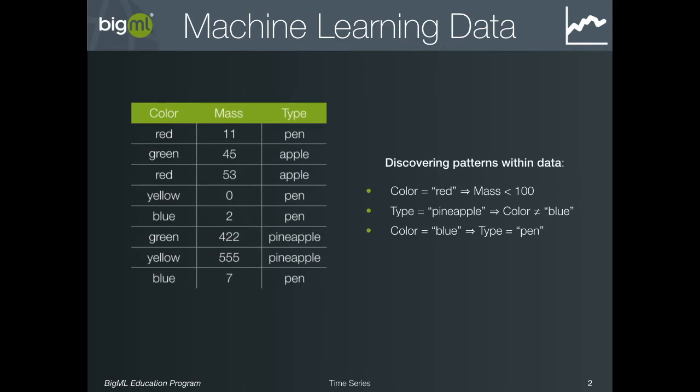An important thing to note is that the ordering of the instances in this dataset does not affect the patterns. Said another way, the instances in this dataset are independent of one another — the type of a given instance does not depend on which instances are before or after it.